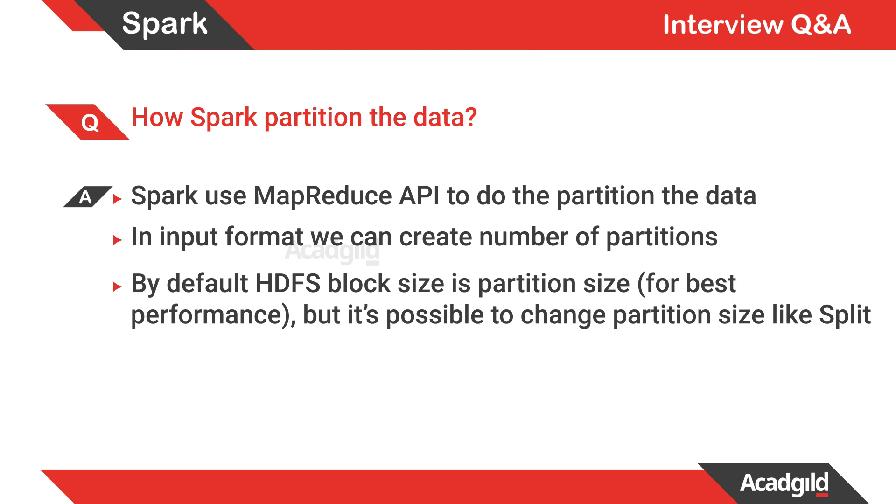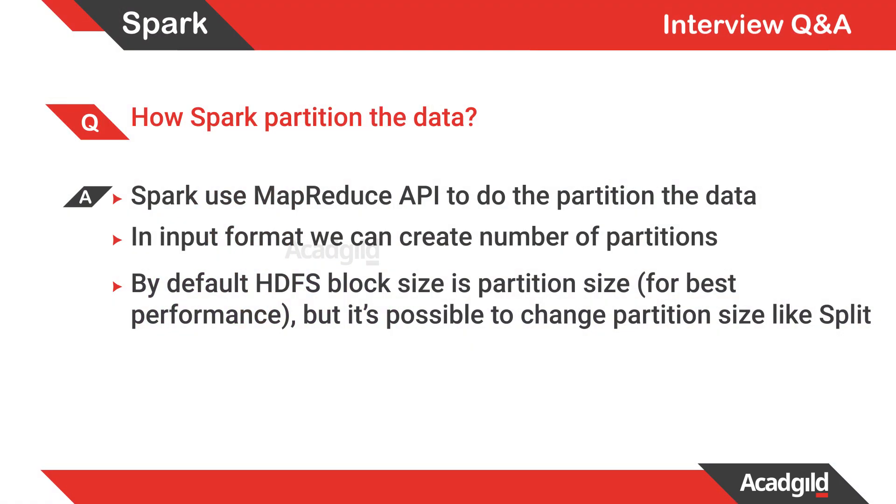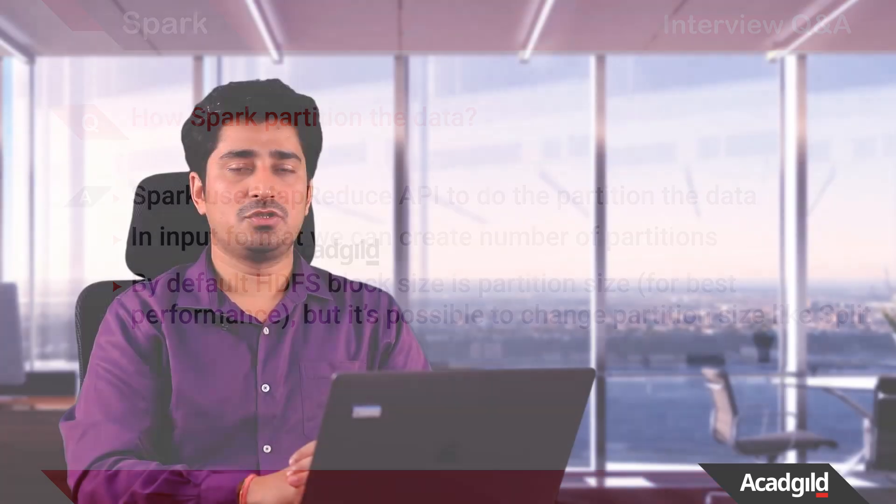By default, the HDFS block size is the partition size, just like in MapReduce — so by default, 128 MB of data equals one partition, which equals one logical division. It is possible to change the partition size, just like an input split that we have been using inside MapReduce.